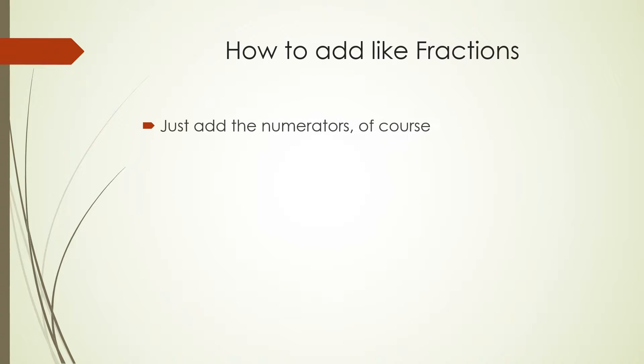Well, you just add the numerators, of course. They're the easiest kind to deal with. Let's take a look at one. If you have 2/9 and 1/9 and you want to add them up, just add the numerators. Give you 3/9.